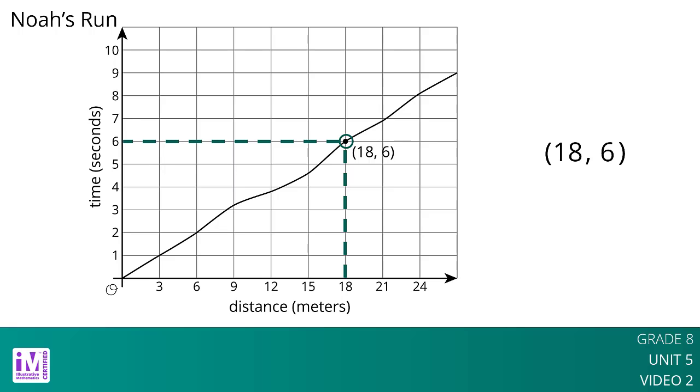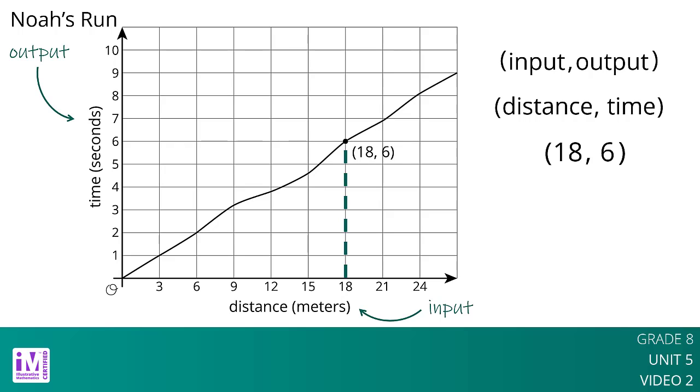The graph of a function is all the coordinate pairs, input, output, plotted in the coordinate plane. By convention, we always put the input first, which means that the inputs are represented on the horizontal axis and the outputs on the vertical axis.